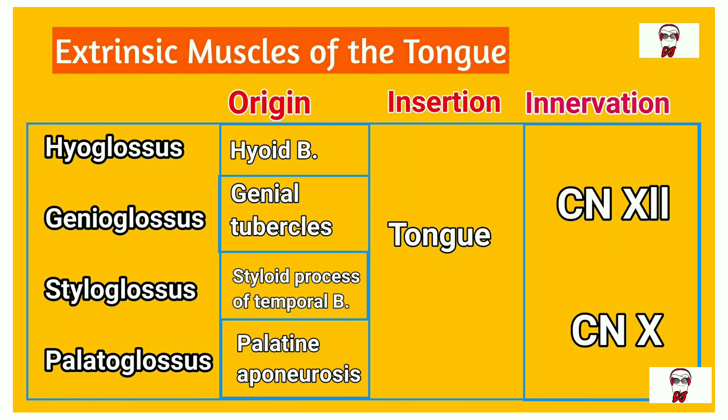These are the extrinsic muscles of the tongue. It's actually very easy to remember their origin and insertion because it is given in the name of the muscle itself. All extrinsic muscles of the tongue end with the word 'glossus,' which means tongue. So the first half of the name gives the origin and the second half gives the insertion. For example, hyoglossus: origin is the hyoid bone, insertion is the tongue. Genioglossus: origin is the genial tubercles, insertion is the tongue.